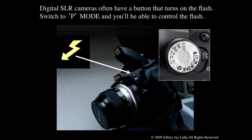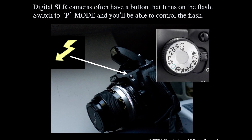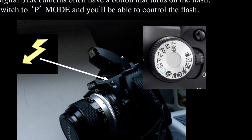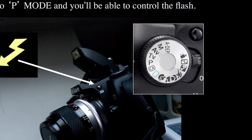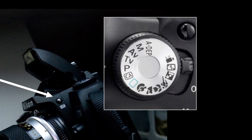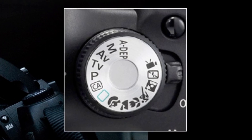Digital SLR cameras often have a button that turns on the flash, but it won't work in auto mode. Switch to the P mode and you'll be able to control the flash. Look on your camera body for a lightning bolt button — press that and your flash will pop up. On your mode dial there is also a lightning bolt with a line through it, which turns your flash off. If you're in a museum or photographing a concert where flash isn't allowed, that's the mode you'll use to defeat the flash.